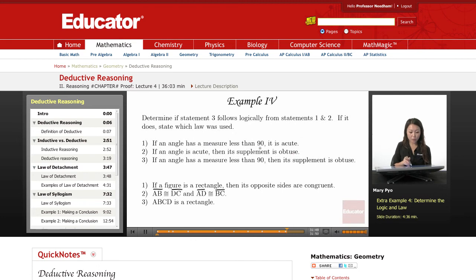So if an angle has a measure less than 90, then it is acute. If an angle has a measure less than 90, that's my P, then it is acute. This is Q, so my conditional is P to Q.